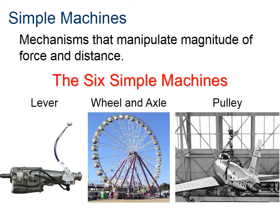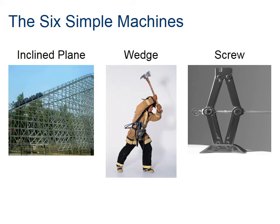Let's talk about what the simple machines are. There are six. The lever, as you see here, which is actually a transmission. The wheel and axle, denoted by the ferris wheel, and a pulley which is a little bit hard to see but it's lifting the aircraft. Rounding out the six simple machines, you see an inclined plane denoted by the roller coaster, a wedge which in this case is shown by an axe, and finally a screw.